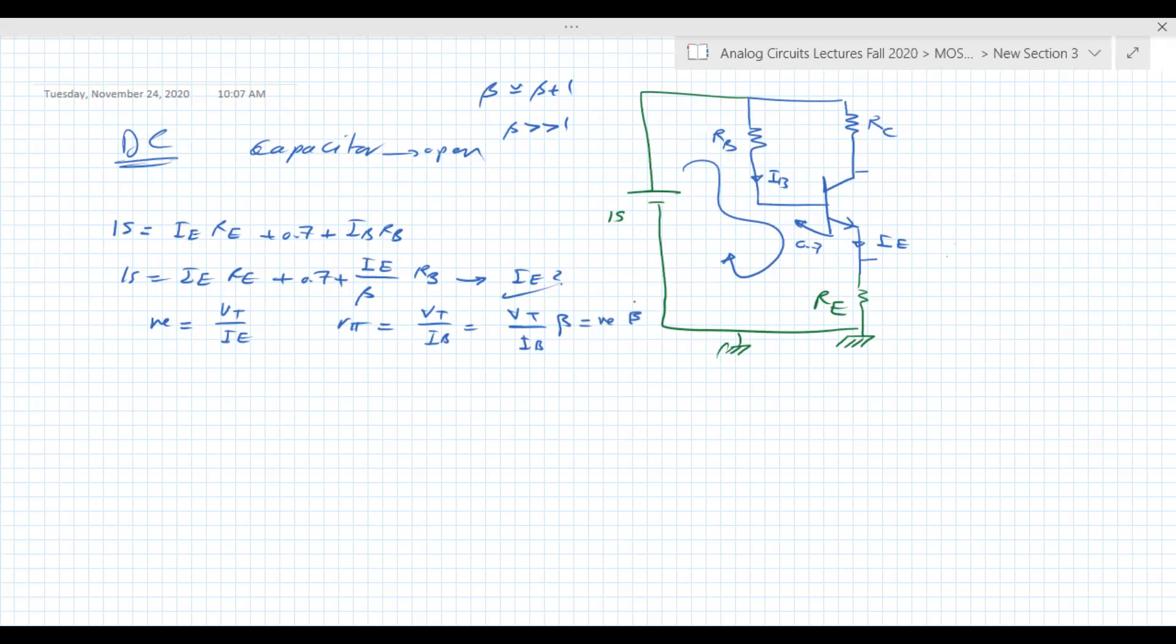If you want to determine VC, VC will be VCC, which is 15 minus IC*RC. IC is known, which is approximately equal to IE, or 0.99*IE. So you have VC, you also have VE. VE is equal to the voltage across RE.